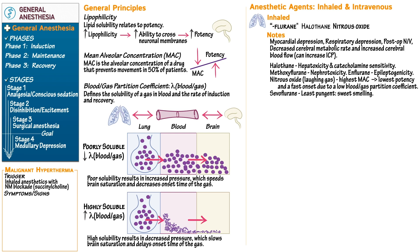Symptoms and signs of malignant hyperthermia include rapid onset of hyperthermia, muscle rigidity, hypertension, and tachycardia. Labs can show hyperkalemia and acidosis. We follow creatine kinase (CK) levels and urine myoglobin levels as markers of muscle injury.